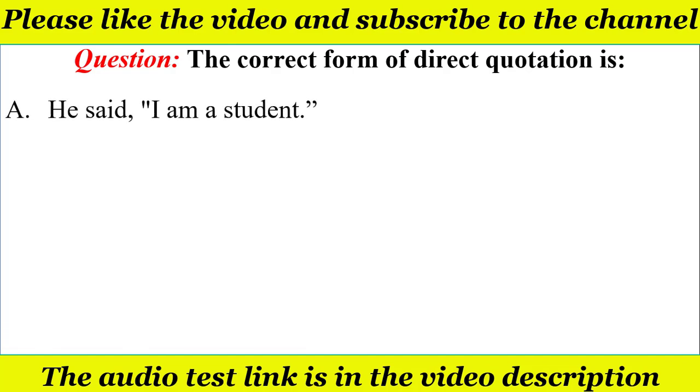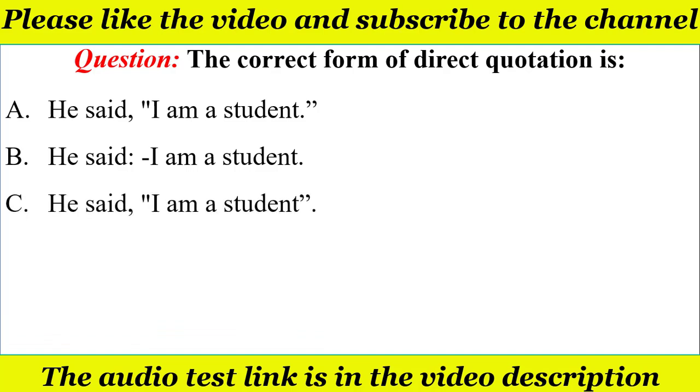First option is he said, then comma, and in quotation mark, I am a student. And second option is he said, then colon and dash, I am a student. Third option is he said, and then comma and quotation mark, I am a student.